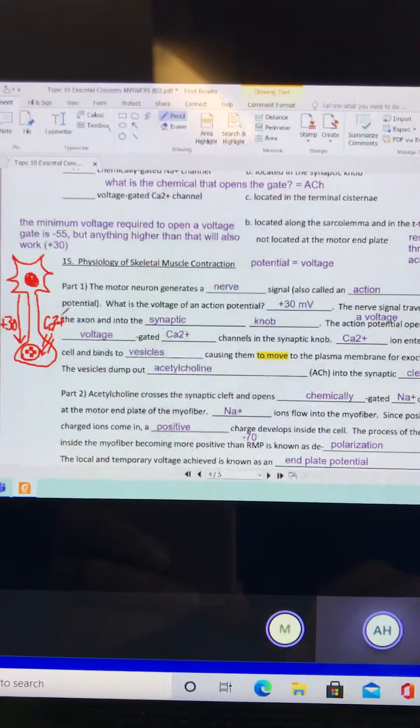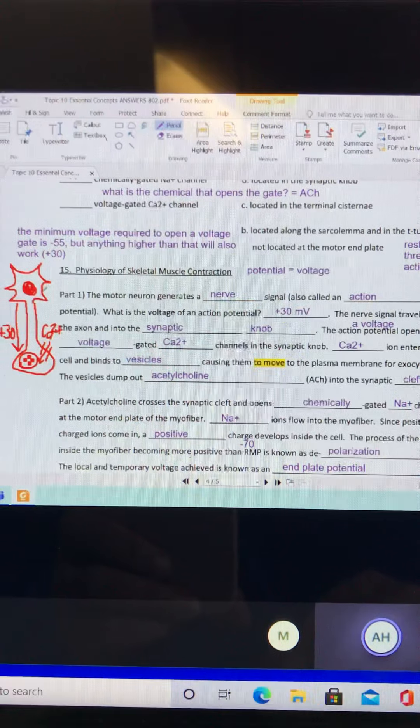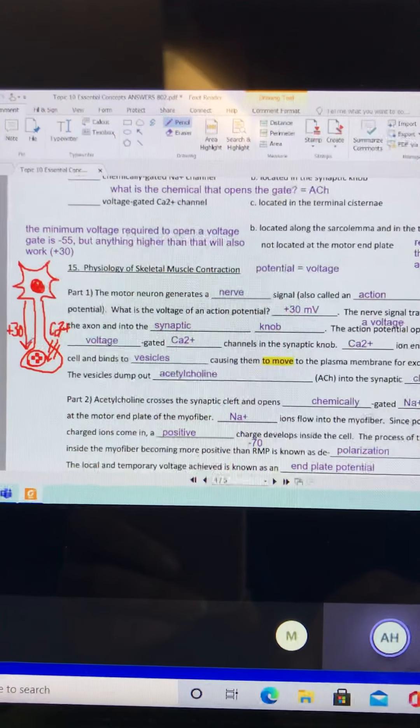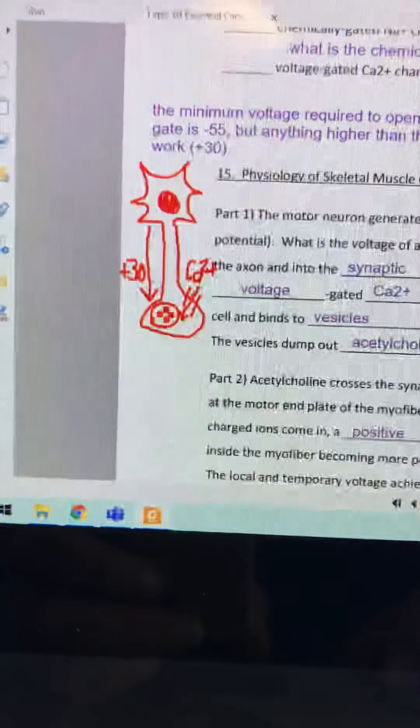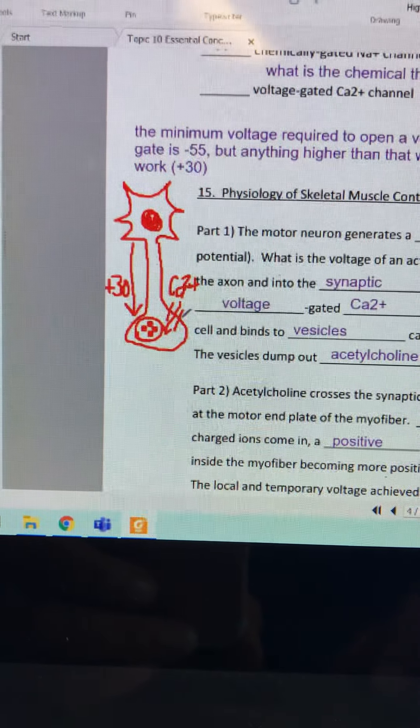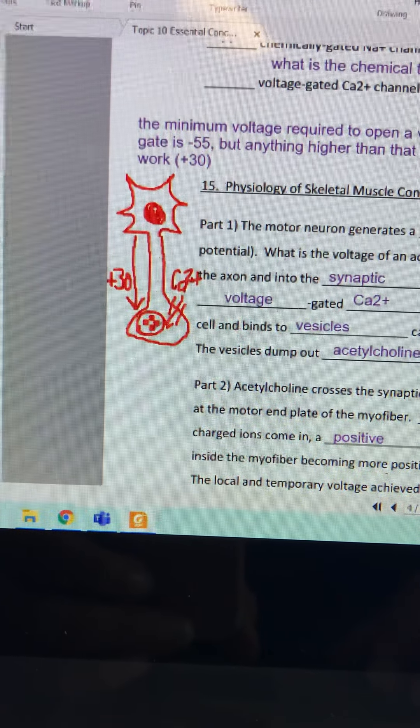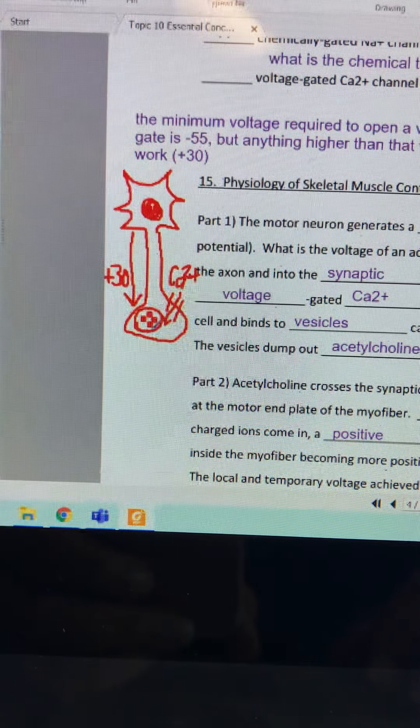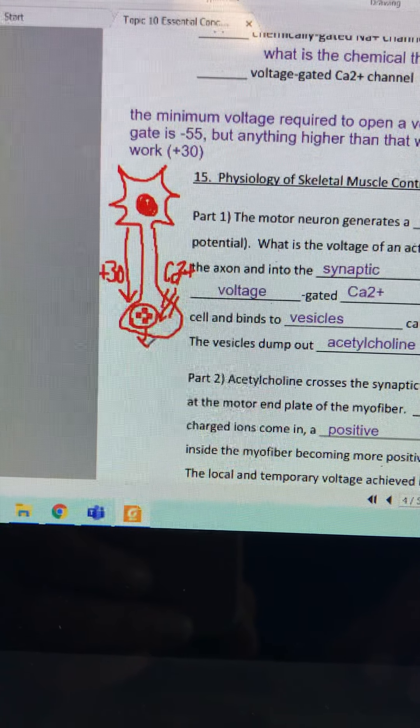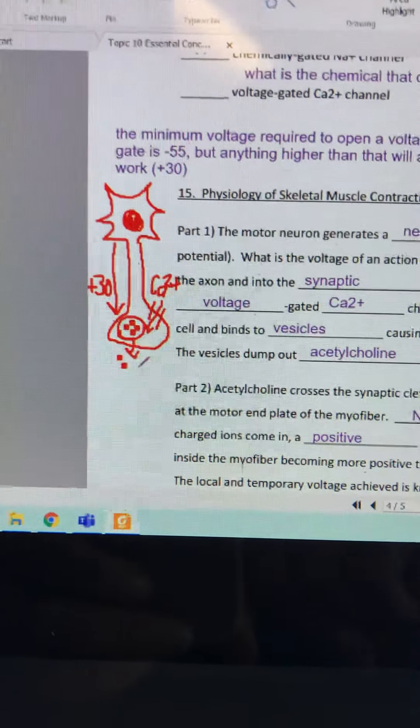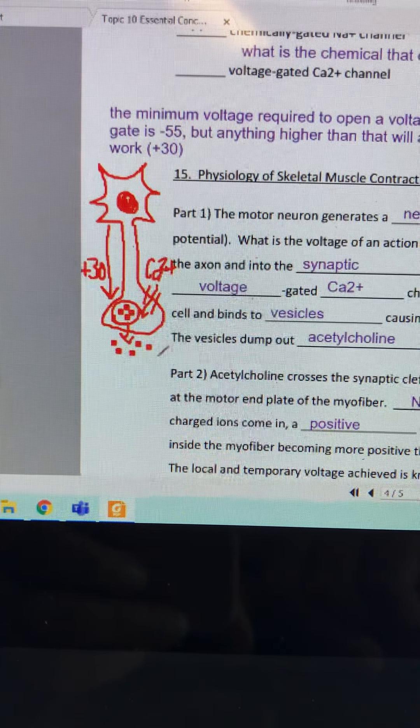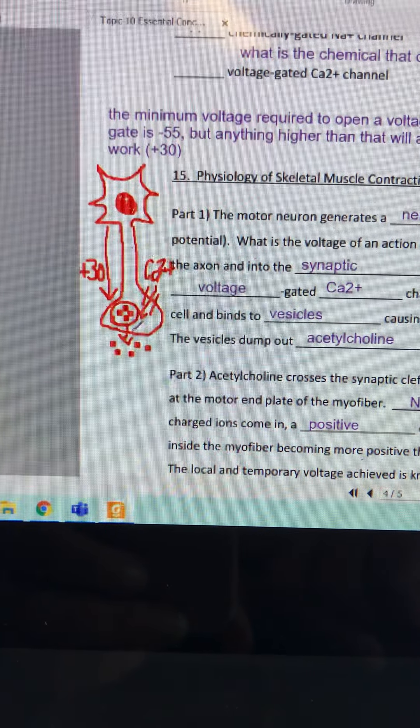So we had a signal that came here just specifically for the purpose of opening that voltage gate and then letting that calcium come in to move that vesicle to dump out the acetylcholine chemical into the space, the synaptic cleft.